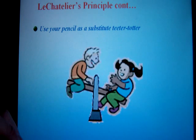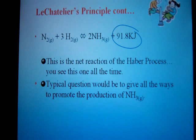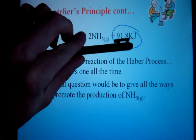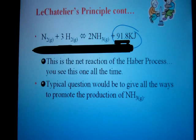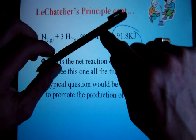The analogy I like to use is the teeter-totter. It's a very simple way of helping you predict shifts. In this example, we are trying to figure out all the different stresses that we could apply to this system to make more ammonia. If I want to make more ammonia, the first thing I need to decide is which way I'm trying to shift towards in the end — which stresses would cause this to happen.